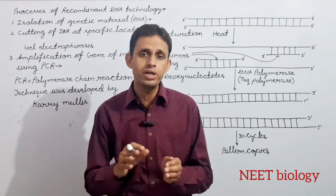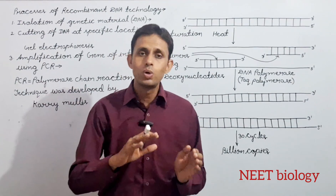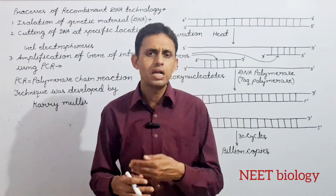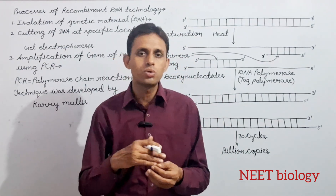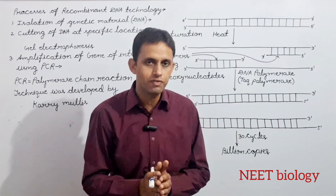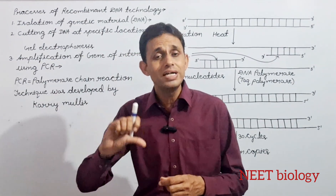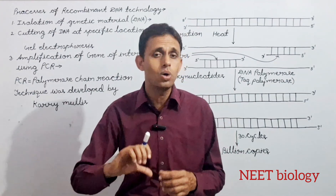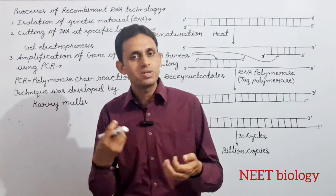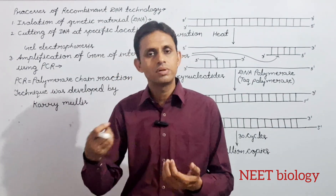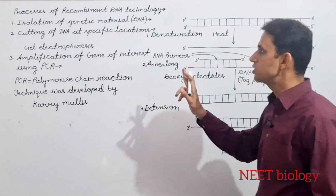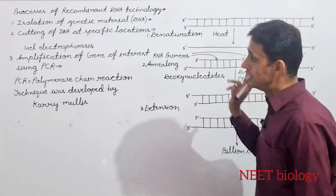उसके बाद protein को remove करने के लिए protease enzyme से treatment देंगे, जिससे protein part भी digest हो जाएगा। और इसके बाद कुछ और substances होते हैं DNA के साथ, उनको भी appropriate enzyme से treatment देकर DNA को purify कर लेंगे। अब उस culture में जब हम chilled ethanol को add करेंगे, तो DNA के fibers threads के रूप में एक side आ जाएंगे, जिन्हें हम बाहर निकाल सकते हैं। इस तरीके से first step है isolation of DNA और genetic material।